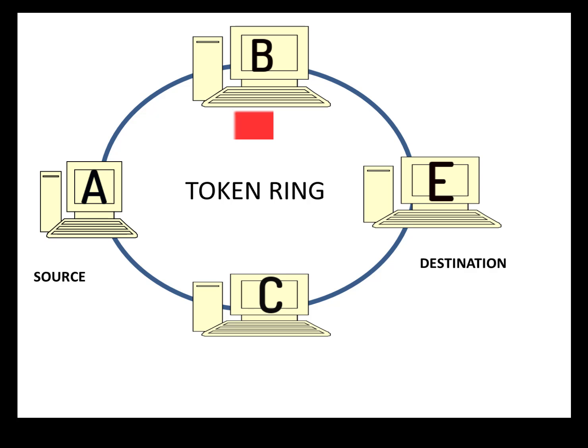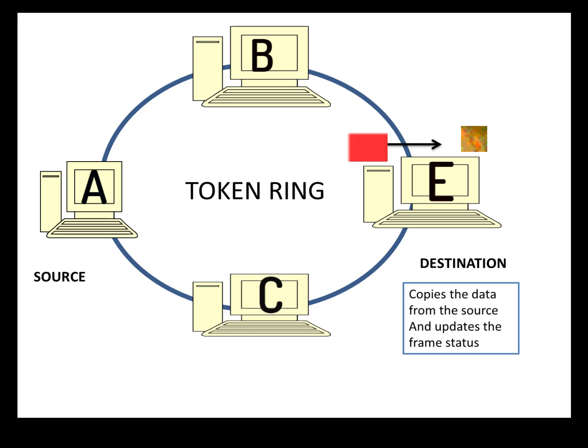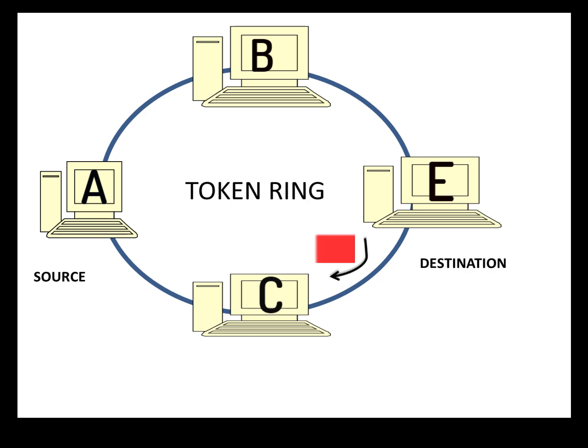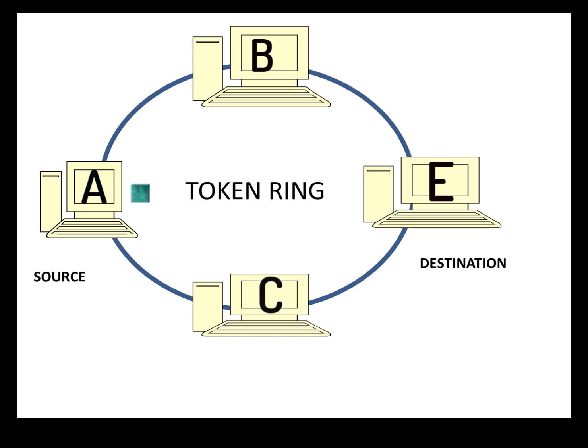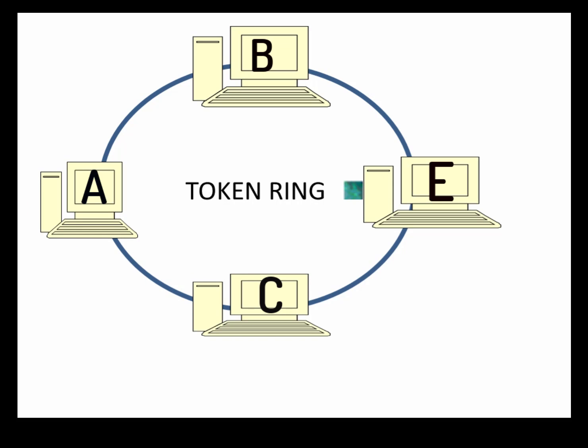The data frame is circulated in the ring. When it reaches workstation E, workstation E copies the data sent by A, updates the frame status, and sends it back in the ring. When it reaches workstation A, A knows that the data was received by E successfully. Once confirmation reaches workstation A, A empties the token and it circulates back in the ring.